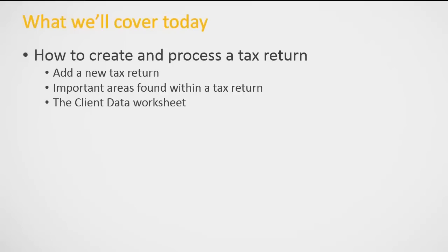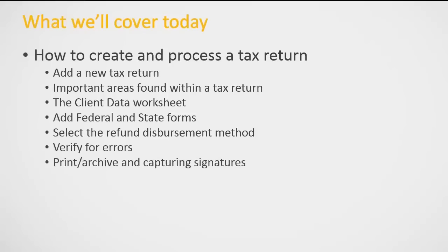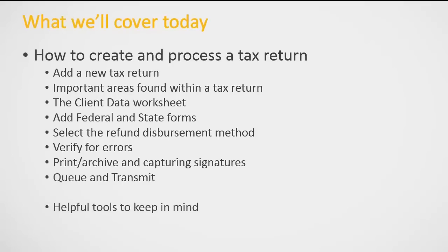We'll also learn how to complete the client data worksheet and how to add federal and state forms. After that, we're going to select the refund disbursement method — in other words, how the taxpayer would like to receive their tax refund. We'll see how to verify for tax errors, how to print and/or archive, and how to capture signatures as well. I'll discuss how to queue and transmit the tax return and the difference between these two functions. And finally, we'll finish up with a few helpful tools — how to add notes, check the current status of a tax return, register payments, and much more.